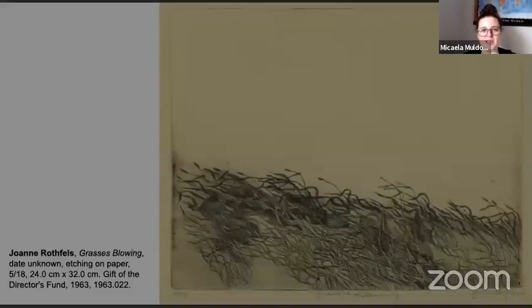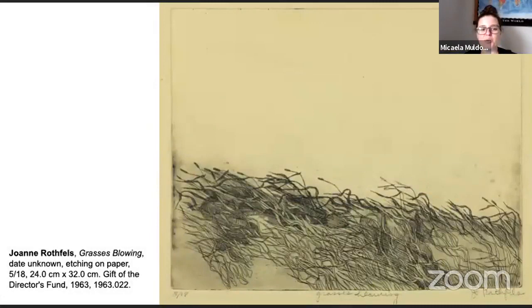Today's artwork is Grass is Blowing by Joanne Rothfels. So this is in keeping with the element of air. That's our element of the week for Mindful Monday. So Joanne Rothfels, just to give you a little bit of background on the artist. She was born in BC in 1923. So she's almost 100 years old now. And she's a Canadian etcher, painter, and author and art educator as well. A multifaceted human being. You may also know her as Jo Rothfels or by her maiden name, Jo Manning. She went by both.